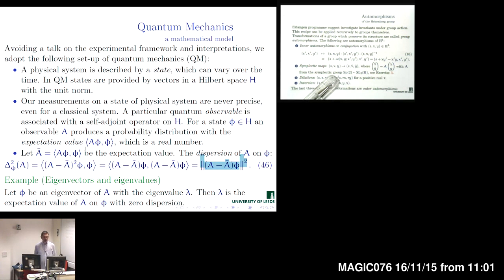An important special case: if there is an eigenvector for a certain operator A, then a measurement performed on that state according to the dispersion formula will have zero dispersion. So on that pure state, which is an eigenstate for A, we get an exact measurement result. Even in the quantum world, theoretically, there is a possibility to obtain an exact measurement if we are somehow able to produce a pure state in our experiments.